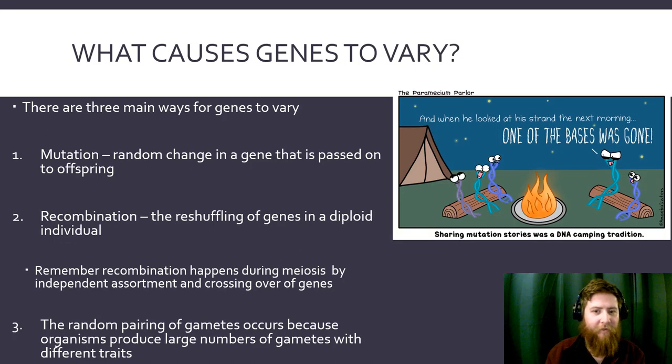So what causes genes to vary? There are three ways for them to vary. The first is mutation—a random change in a gene that is passed on to offspring. Our second type is recombination, which is the reshuffling of genes in a diploid individual. This happens during meiosis, so when you give genes to your offspring, it is a random assortment of genes. They aren't the exact same genes that you have. And the last one is the random pairing of gametes occurs because organisms produce a large amount of gametes with different traits. Once again, this is why you and your siblings are very much different. You each came from individual gametes that fused together to form individual organisms.